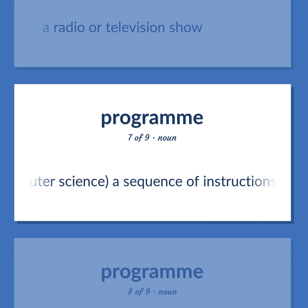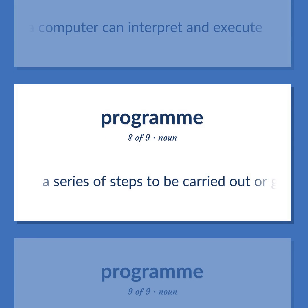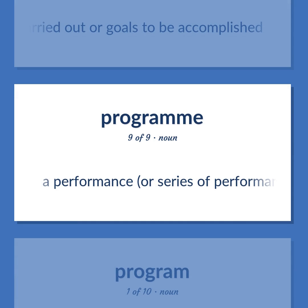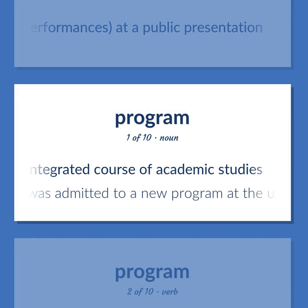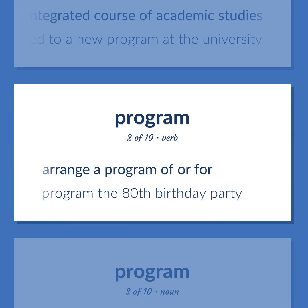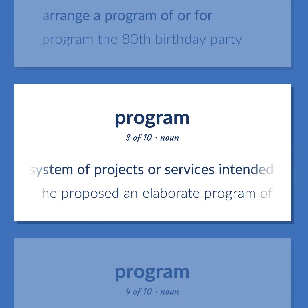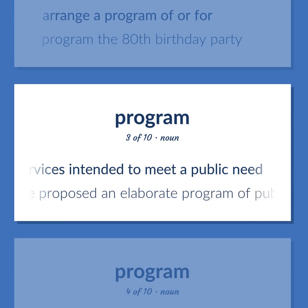Program: Computer science — a sequence of instructions that a computer can interpret and execute. A series of steps to be carried out or goals to be accomplished. A performance or series of performances at a public presentation. An integrated course of academic studies — he was admitted to a new program at the university. Arrange a program of or for — program the 80th birthday party. A system of projects or services intended to meet a public need — he proposed an elaborate program of public works.